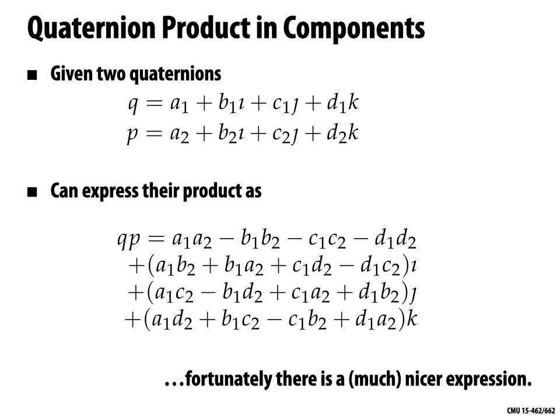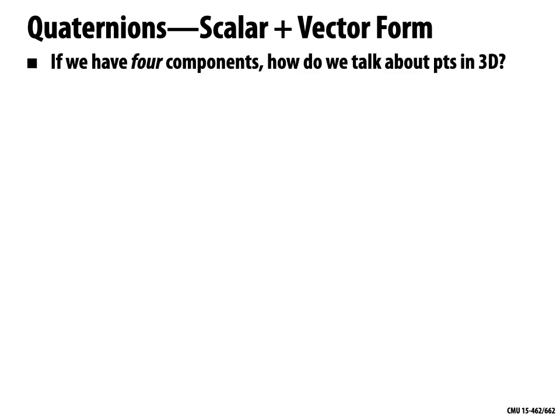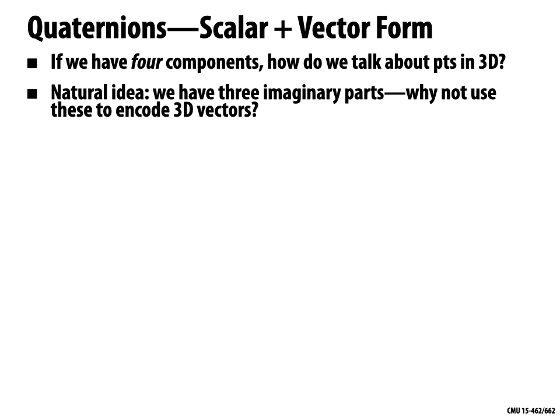In 2D we had a magnitude and a direction. With four components, the first thing to say is: if we have three imaginary parts i, j, and k, why not use those to encode three-dimensional vectors? If I start with a point (x, y, z) in 3D space, to encode it as a quaternion I write 0 + xi + yj + zk — no component in the real direction, storing my ordinary coordinates with i, j, and k. Alternatively, a quaternion can be viewed as a pair involving a scalar and a three-dimensional vector.